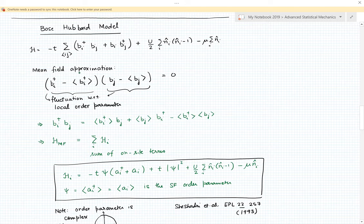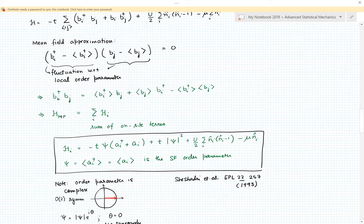Recognizing that the order parameter will be b_i^† expectation value, we can look at the fluctuations of this operator with respect to the local order parameter. When I multiply that on two sites, the fluctuation squared we assume is zero - that's the mean field approximation. This can then be expanded and what it gives us is b_i^† b_j is essentially a term like either b_j or b_i^† - these operators which multiply average of these operators which are basically the order parameters, and a constant term which is the third term here.